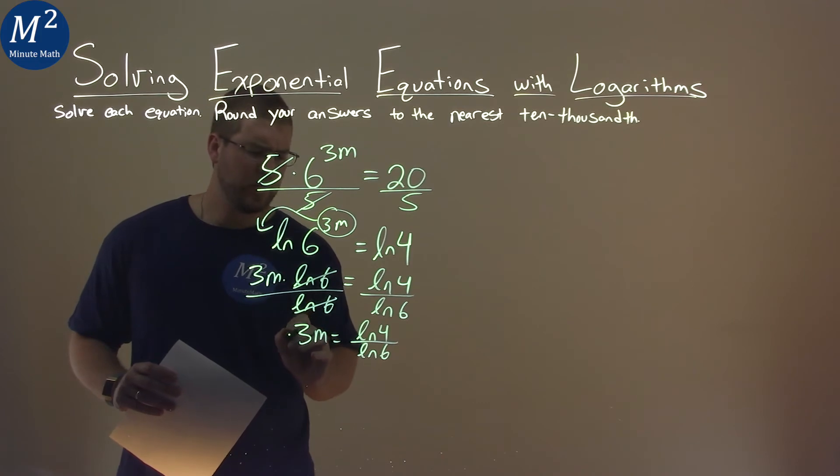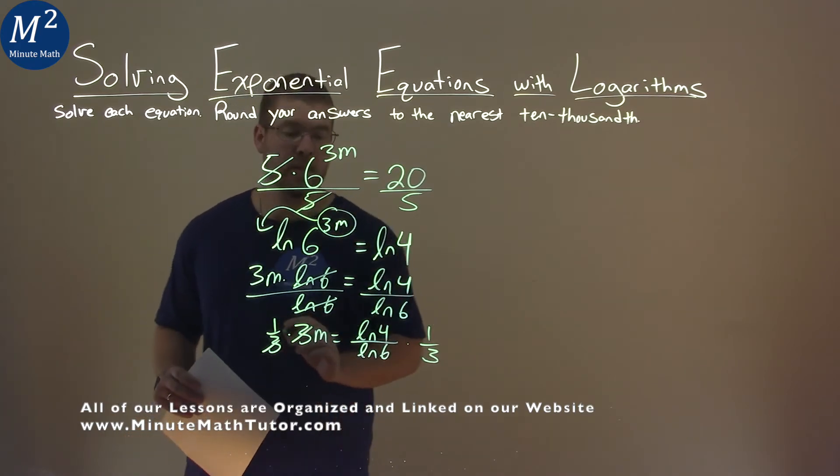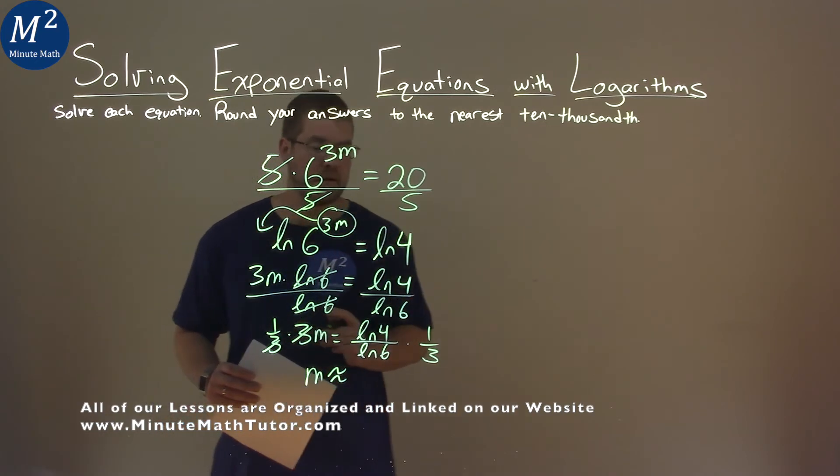I then can get rid of this 3 by multiplying both sides by 1 third. The 3 and 1 third cancel on the left, and m is now by itself. This is going to be approximate because we're going to use our calculator here.